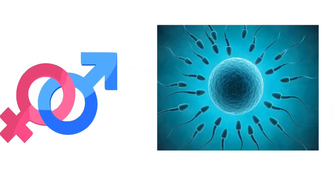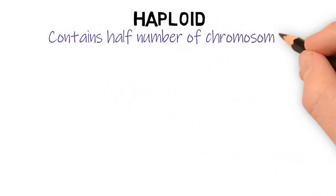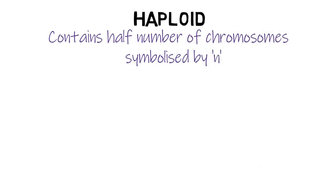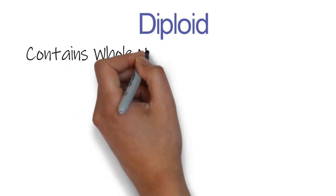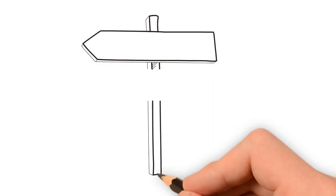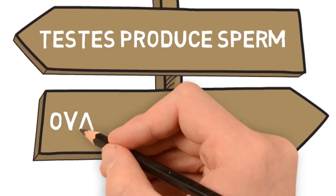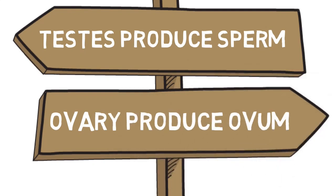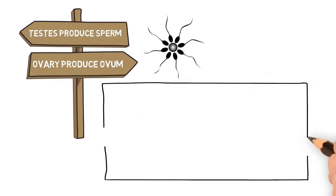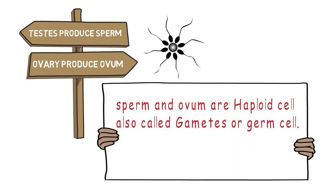Then, what is haploid? If a cell contains only half number of chromosomes, it is called haploid and the symbol is n. In case of diploid, if a cell contains whole set number of chromosomes, it is called diploid - twice. Remember, testes and ovary are called gonads and they produce sperm and ovum respectively. One more thing - sperm and ovum are haploid cells, also called germ cells or gametes.